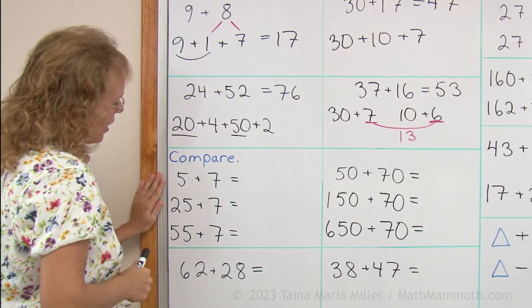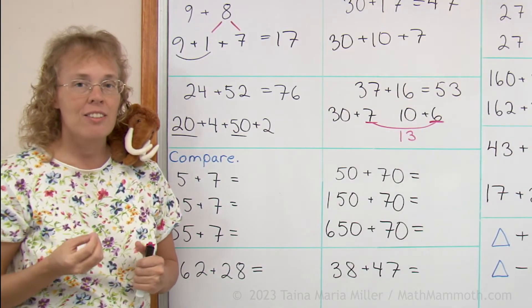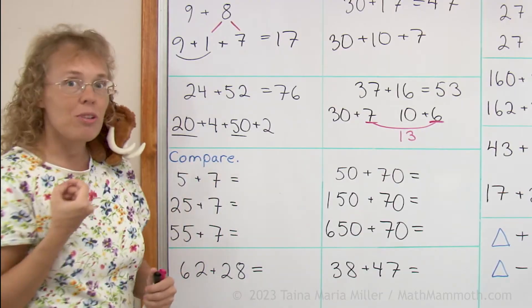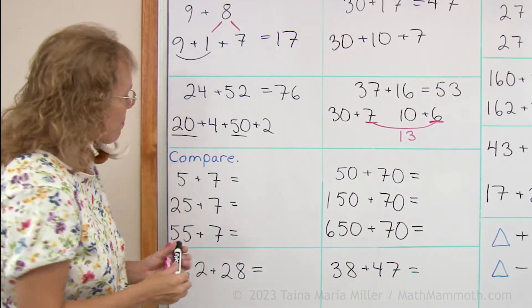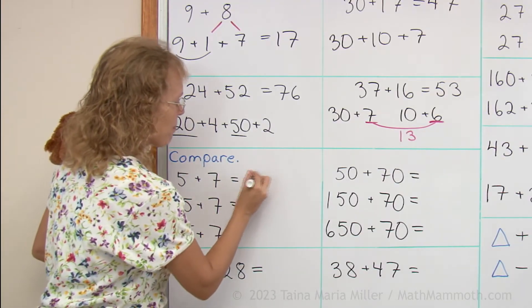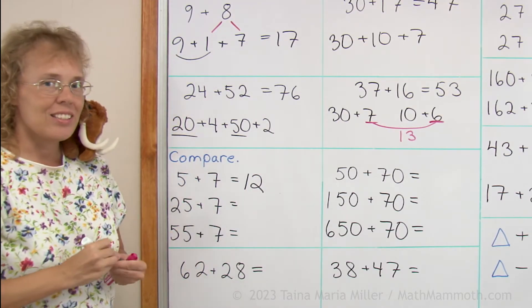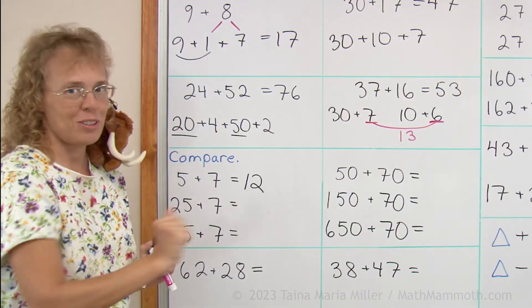Here's another one. And that is that we first have a helping problem, so to speak. 5 plus 7, we know the answer to. It is 12. Or it is 2 more than 10. It fills the 10 and goes 2 over, so to speak.